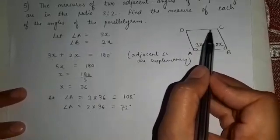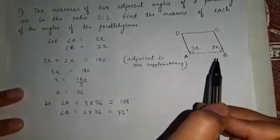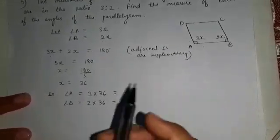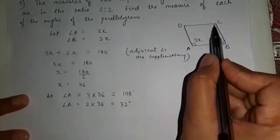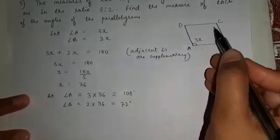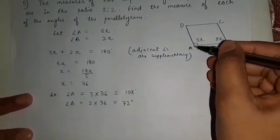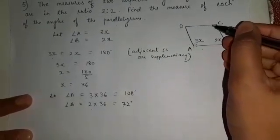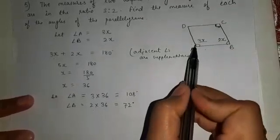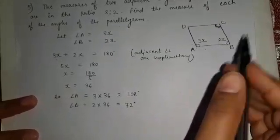Now there are 2 more angles in the parallelogram, which we can find out using the property that opposite angles of a parallelogram are equal to each other. Angle C is opposite to angle A — A and C are opposite angles. So whatever is the value of A, the same will be the value of angle C. If angle A is 108 degrees, angle C is also 108 degrees.